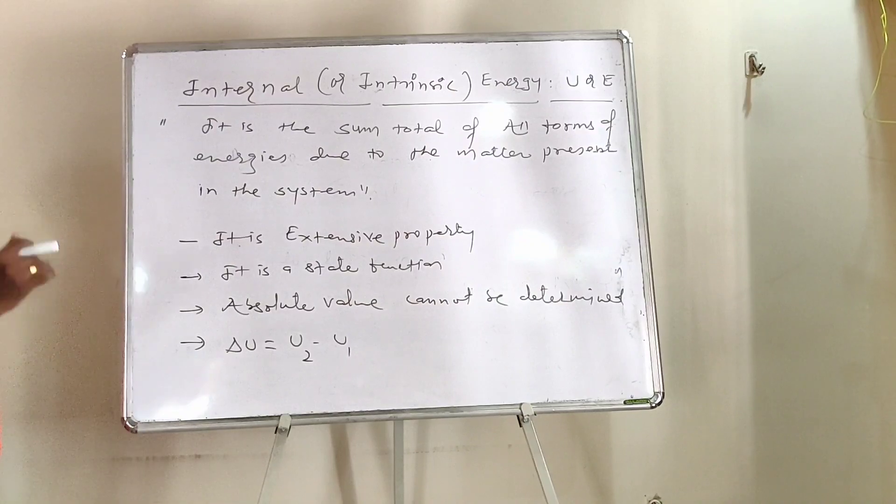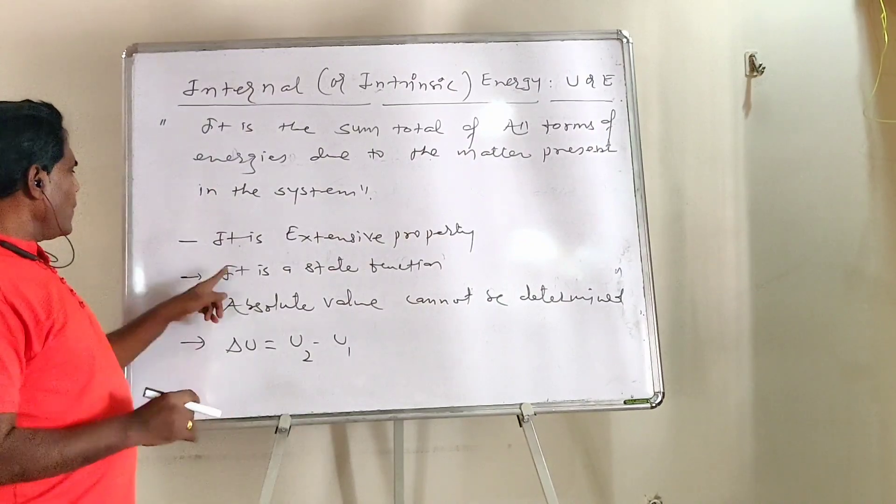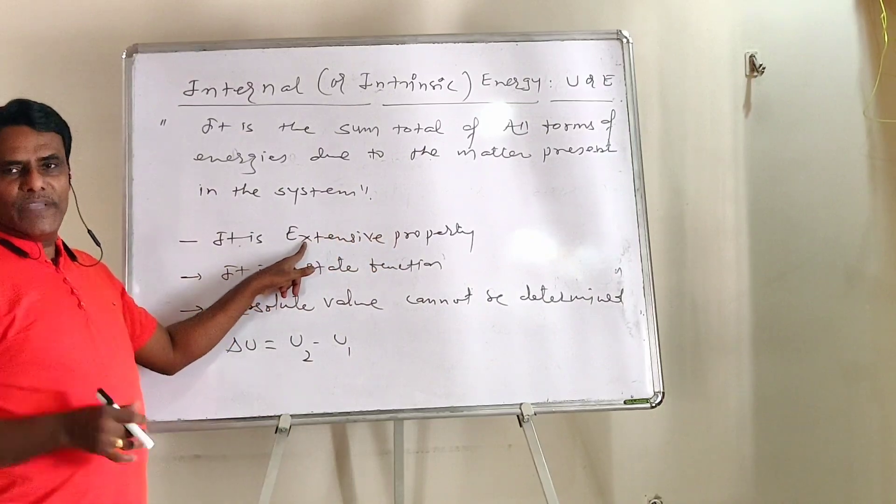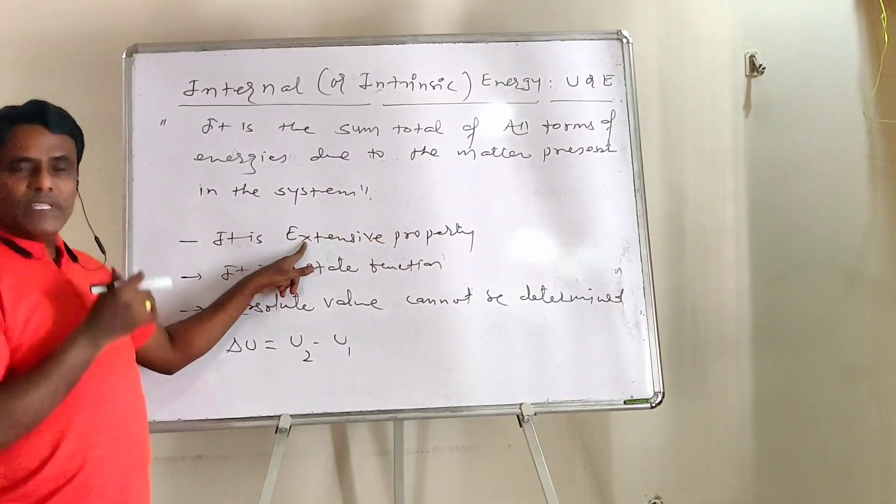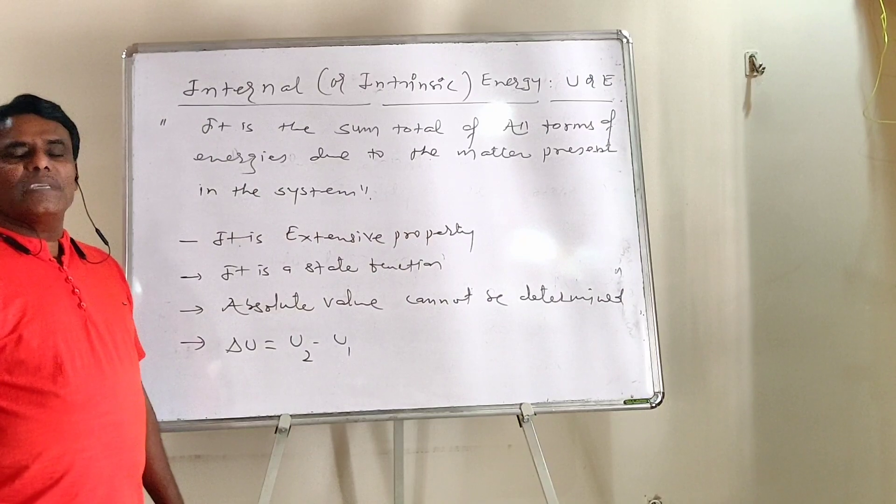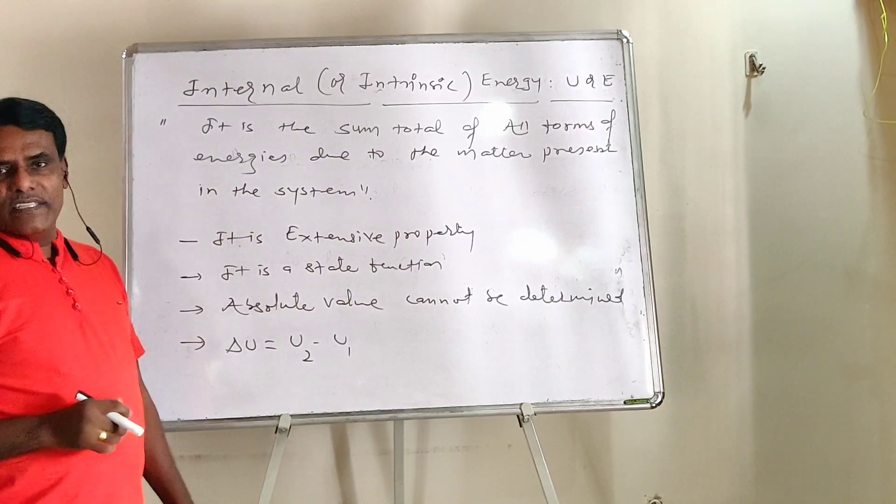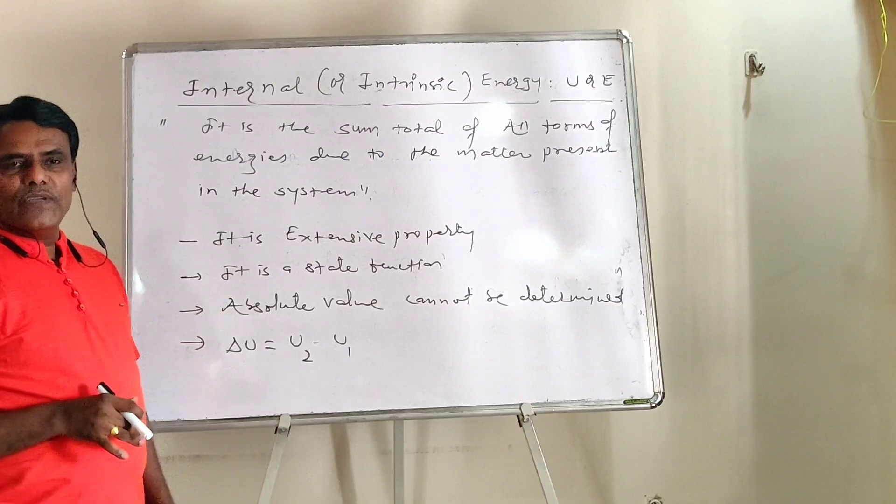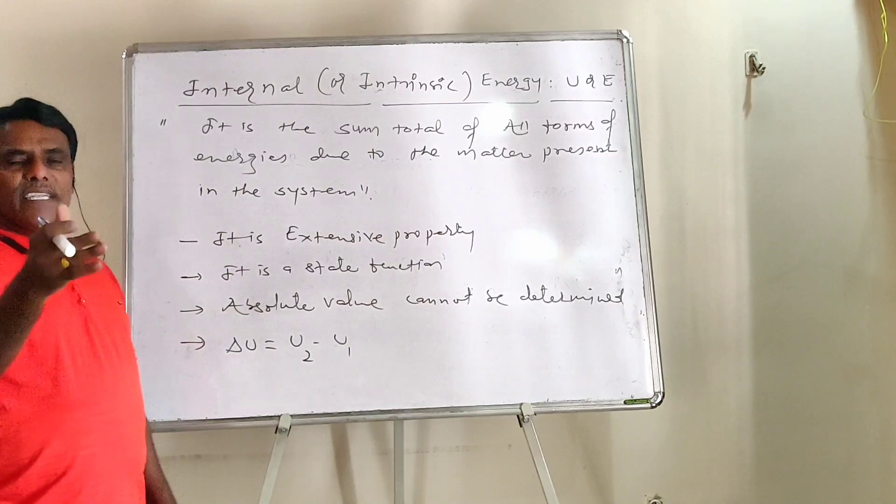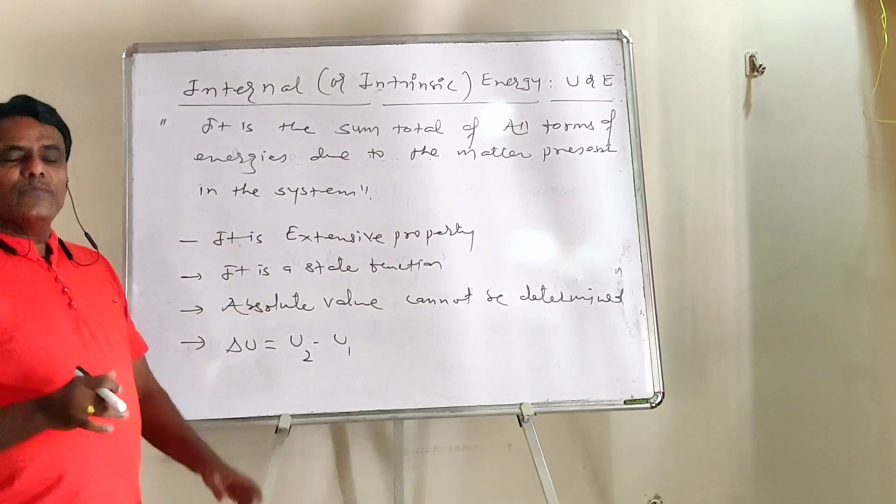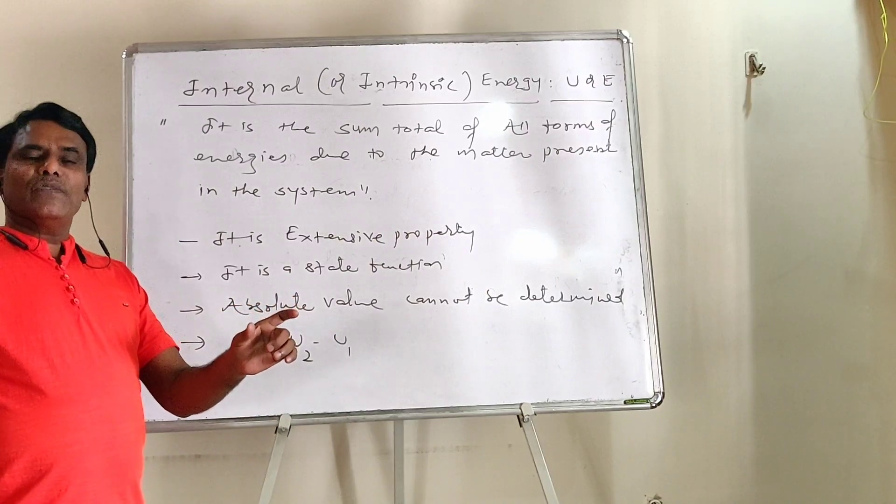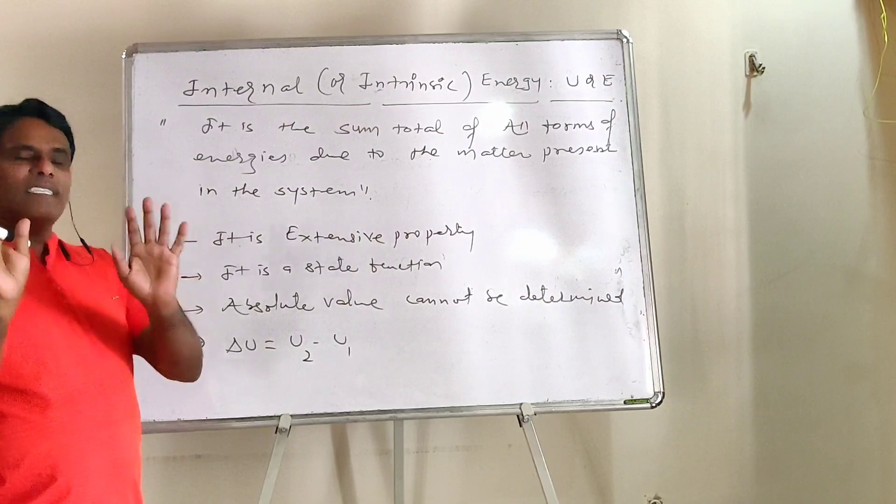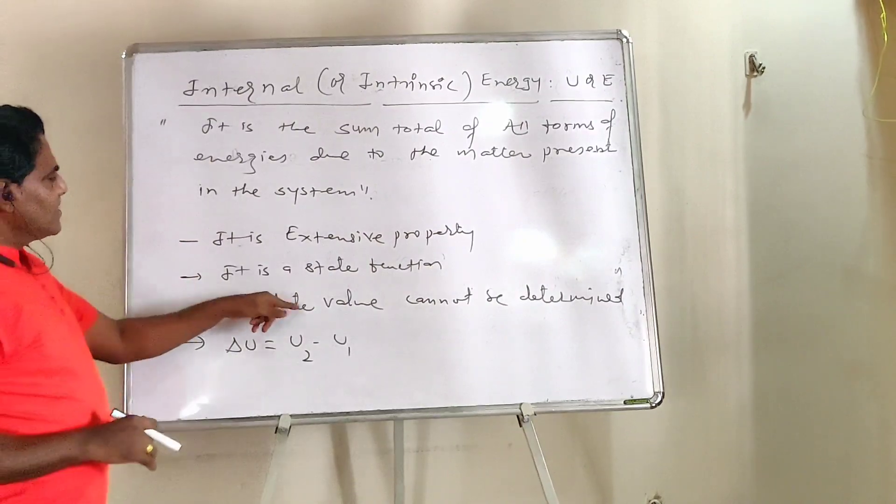It is represented by capital U or capital E. Internal energy is an extensive property. Its value depends upon quantity of matter present in the system. The more matter, the more internal energy. The less matter, the less internal energy. So five gram water and five hundred gram water - five hundred gram water will have more energy. It is a state function.